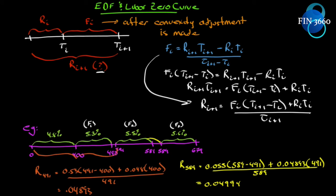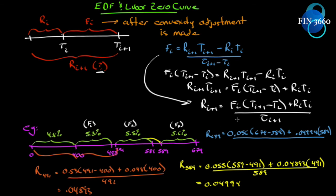If we want to extend to day 679: fi is 0.056, the date difference is 679 minus 589, plus ri times ti — which is 0.04994 times 589 — all divided by 679. We get 0.05074. We can keep going and going, and you can see how this extends our LIBOR zero curve by using Euro dollar futures rates after the convexity adjustment is made.